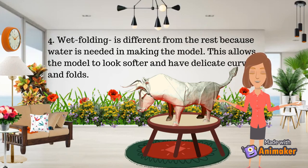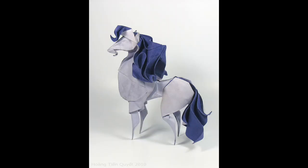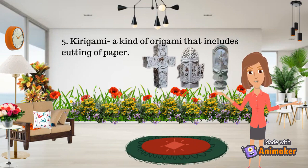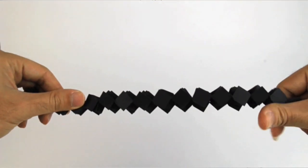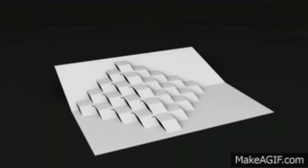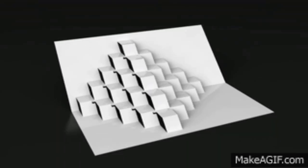The fourth kind is Wet Folding, which is different from the rest because water is needed in making the model. This allows the model to look softer and have delicate curves and folds. The last kind is Kirigami, a type of Origami that includes cutting of paper.